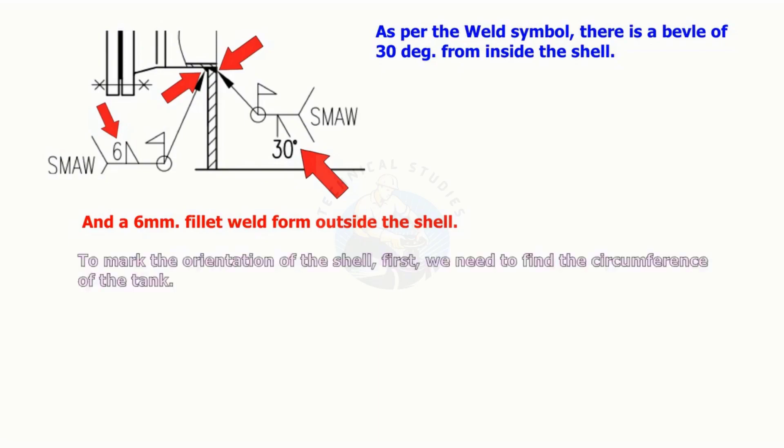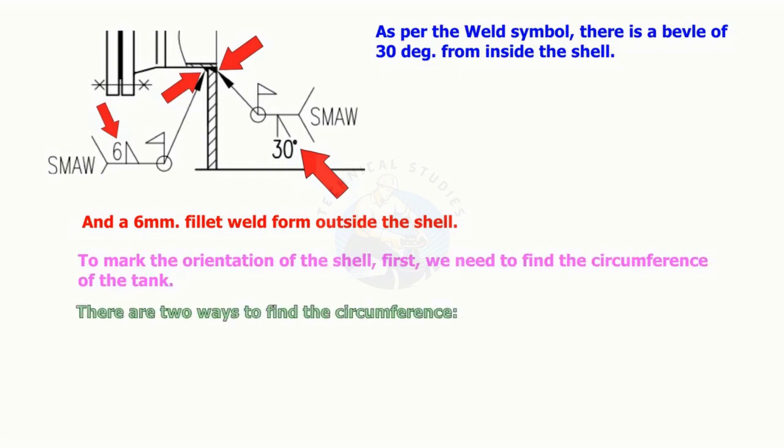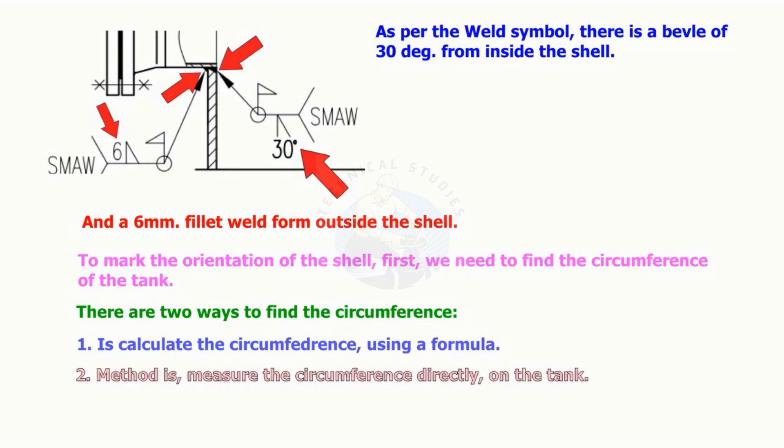To mark the orientation of the nozzle, we need to find the circumference of the tank. There are two ways to find the circumference: calculate the circumference using a formula, or measure the circumference directly on the tank.